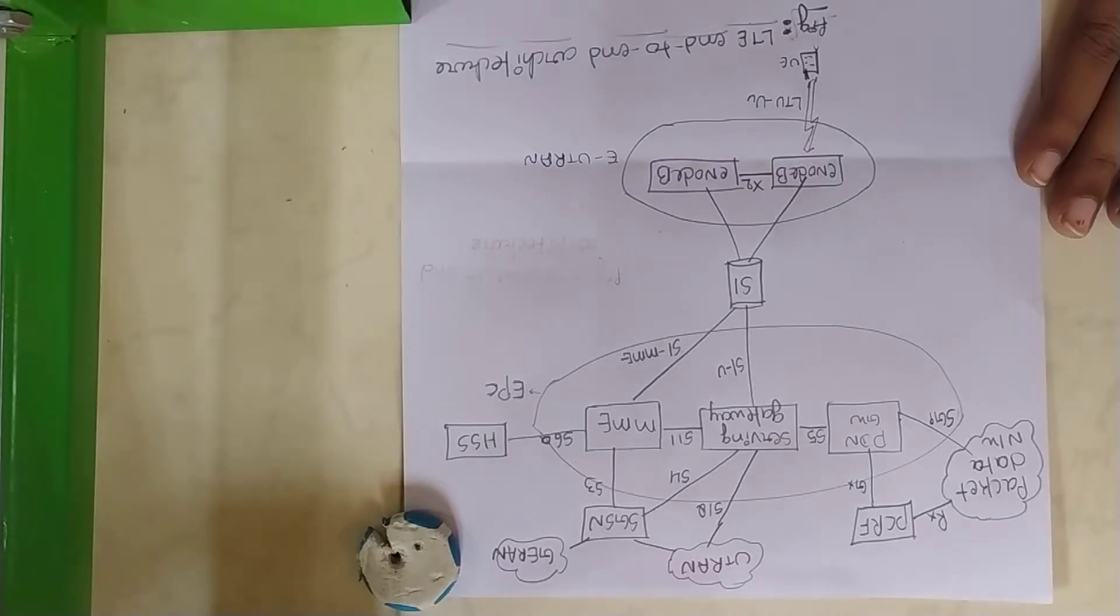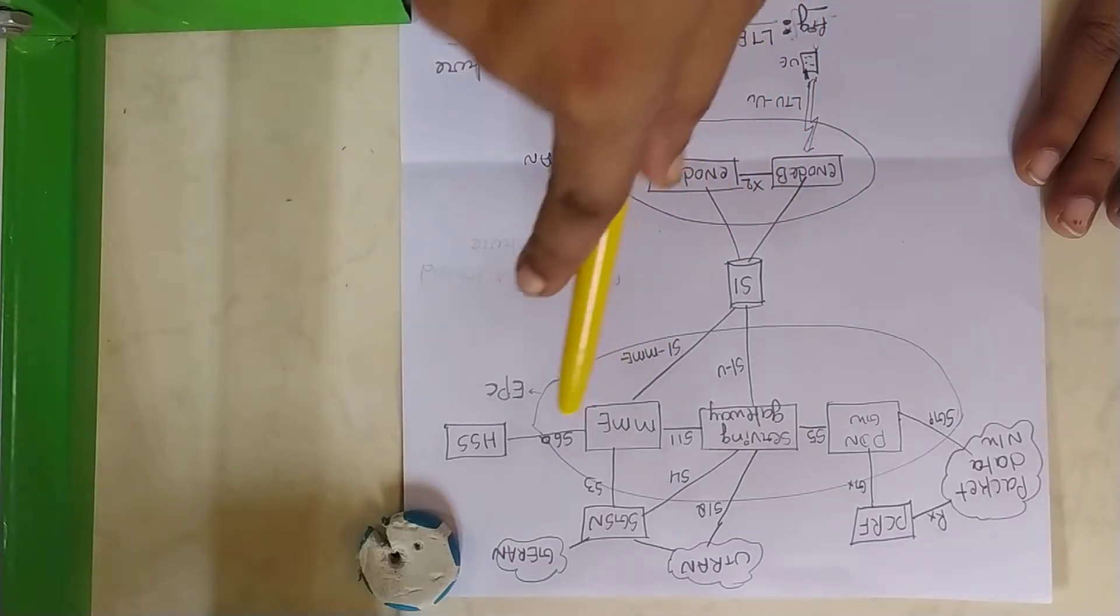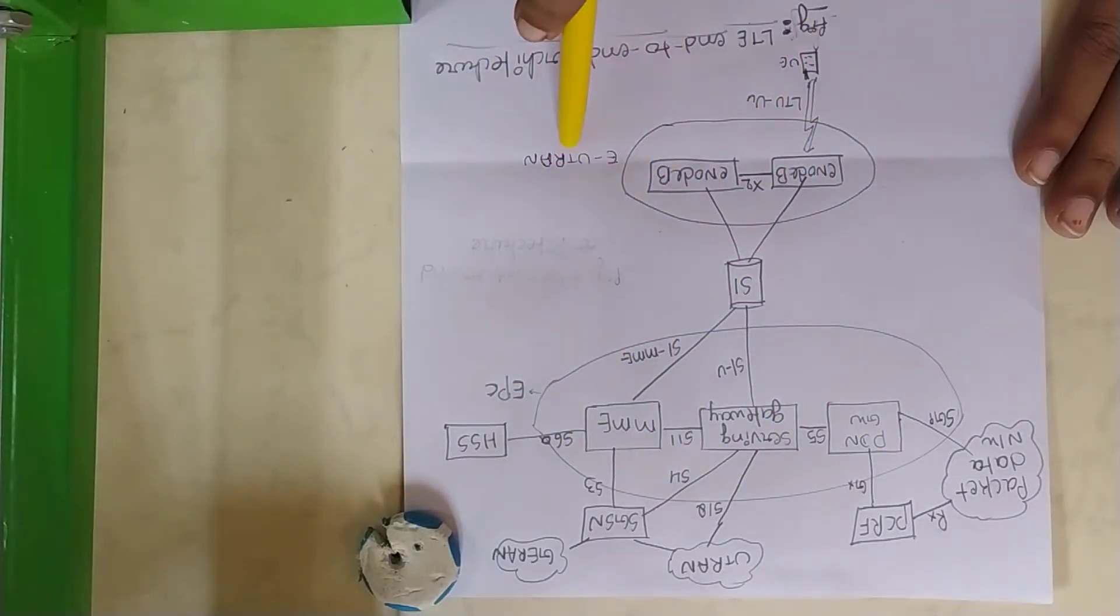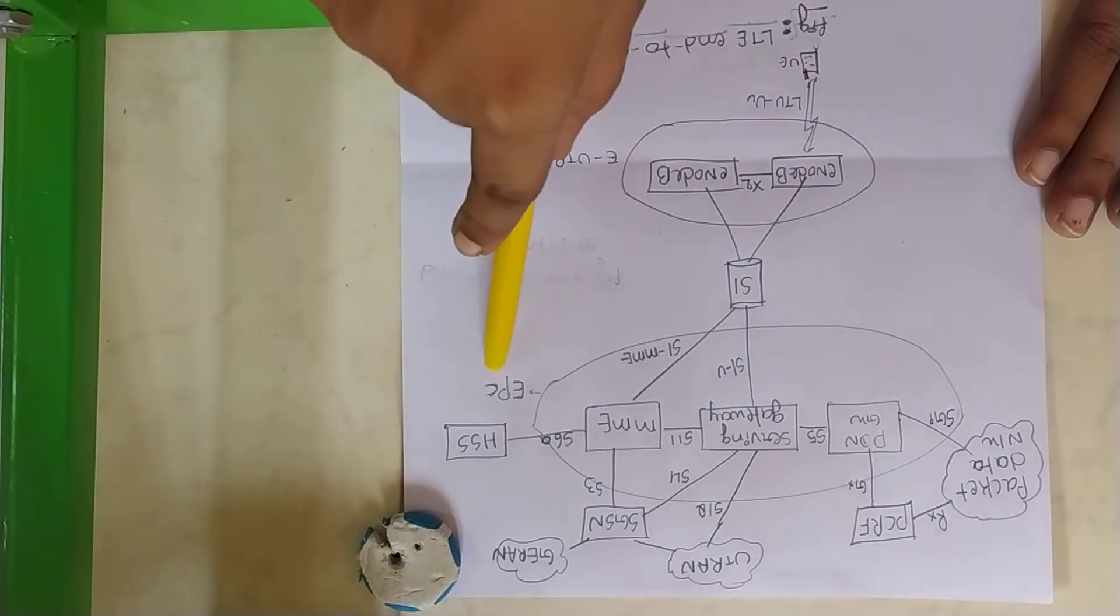This is an LTE end-to-end network architecture. You can see here, UE is there, EUTRAN is there, EPC is there. The LTE architecture mainly consists of these three components: UE, EUTRAN, and EPC.